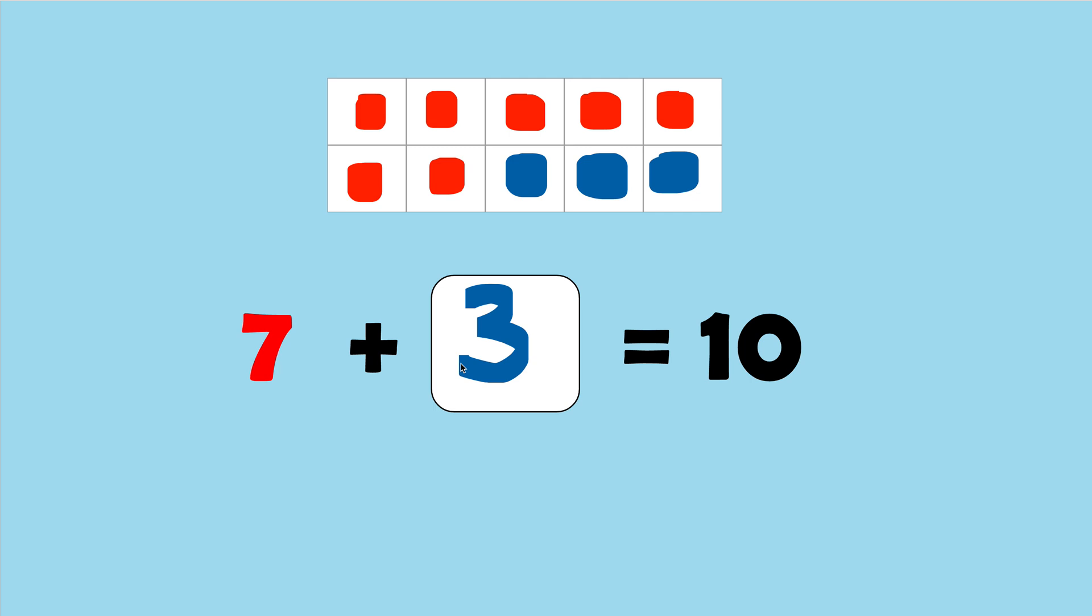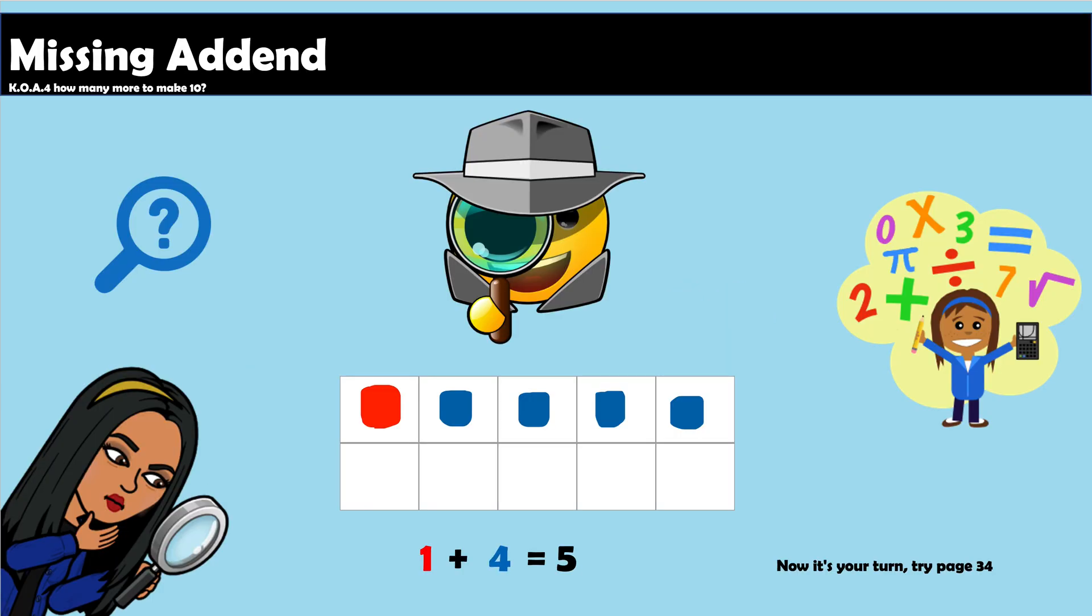Now that you're done learning about the missing addend, I want you to try it on page 34 of your packet.